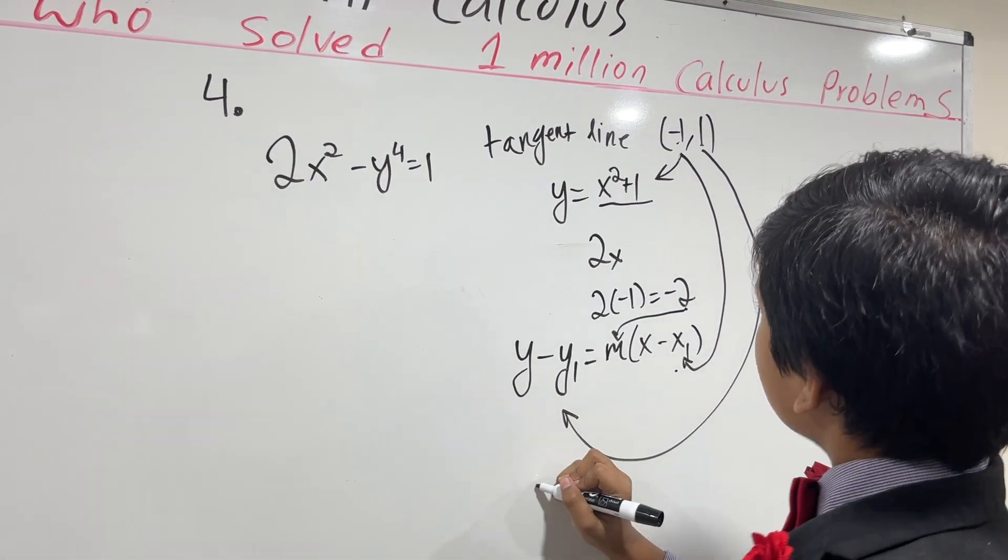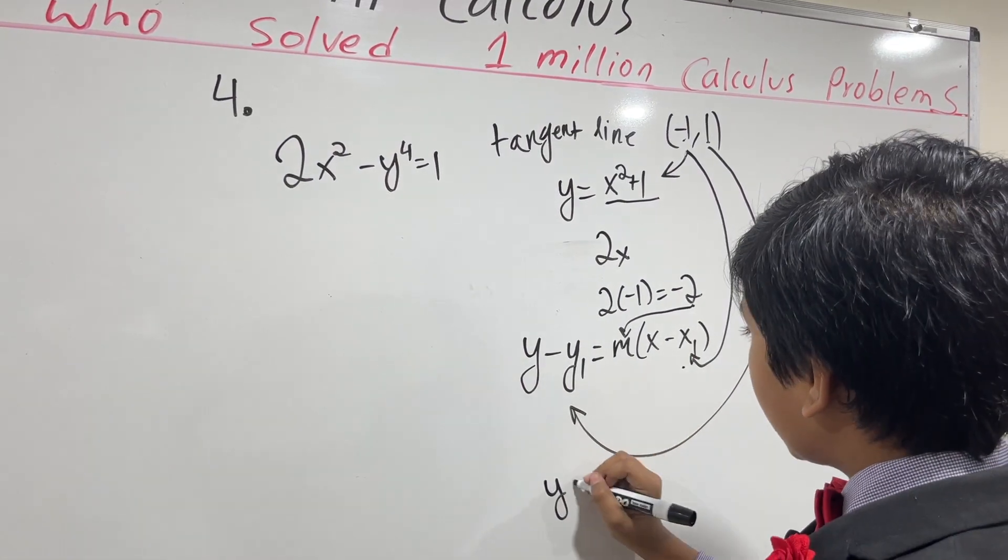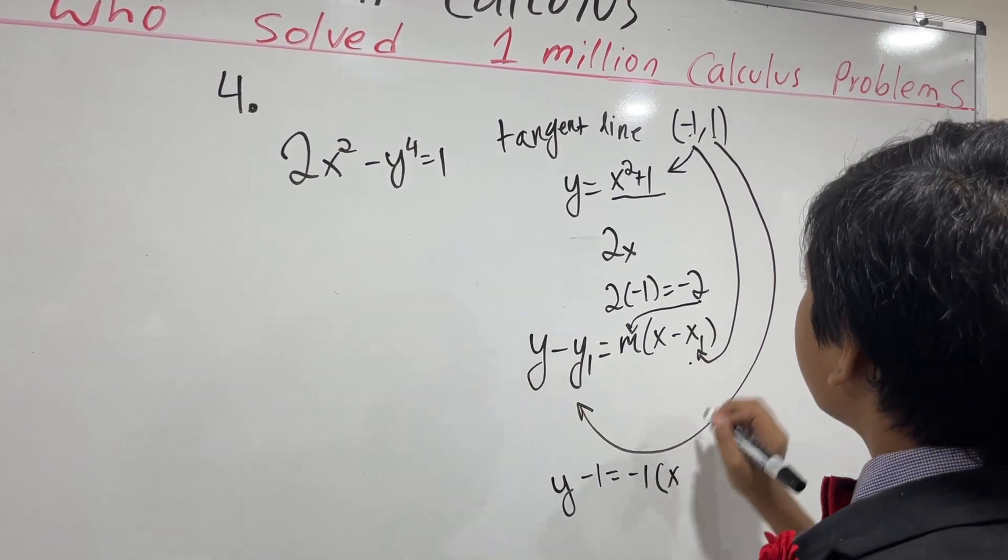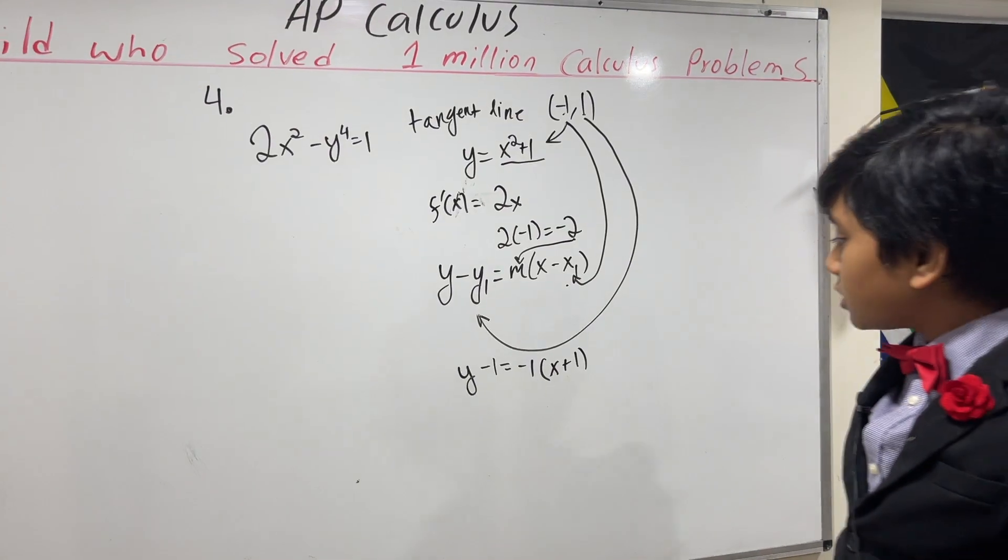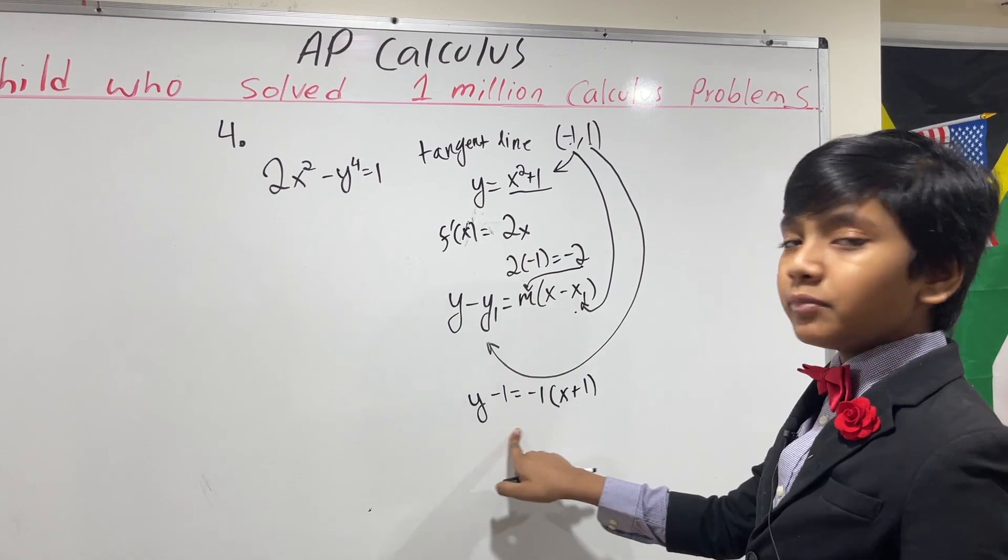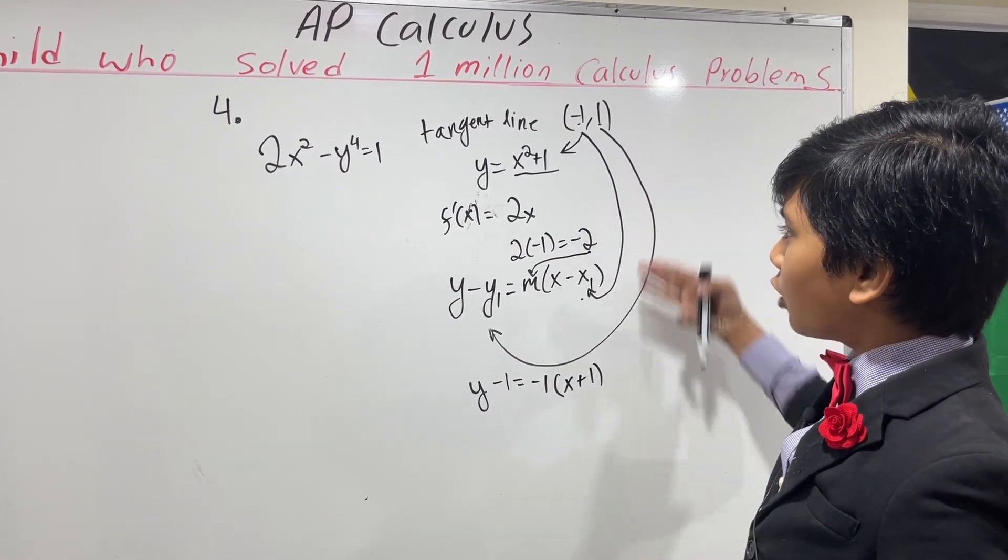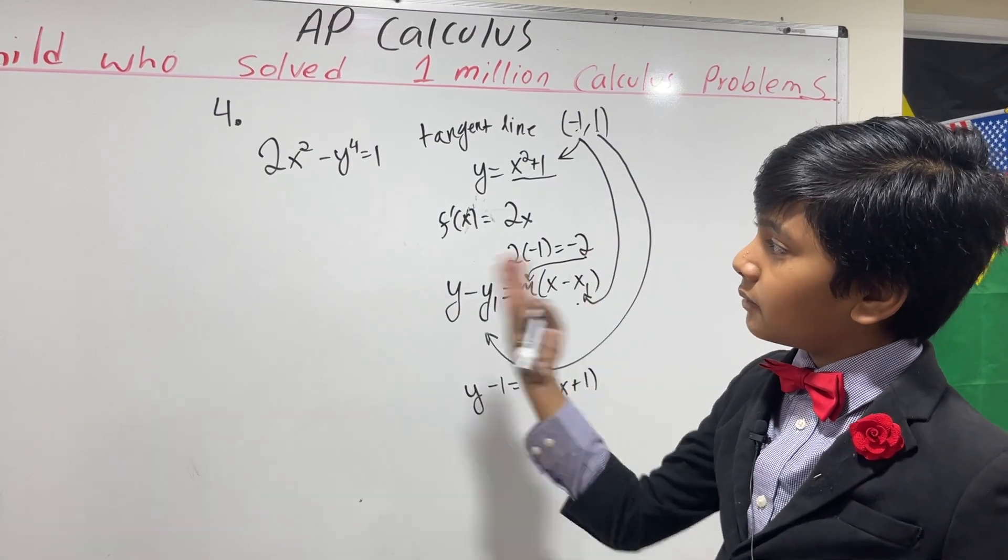Okay, so that gives us y minus 1 equals minus 2 times x minus minus 1. So, now, you can simplify this in this form. So, now, let's try and take those principles and apply them here.